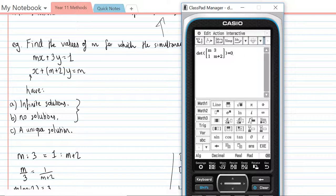The next thing we have to do is solve this for m to find out what values of m make this happen.